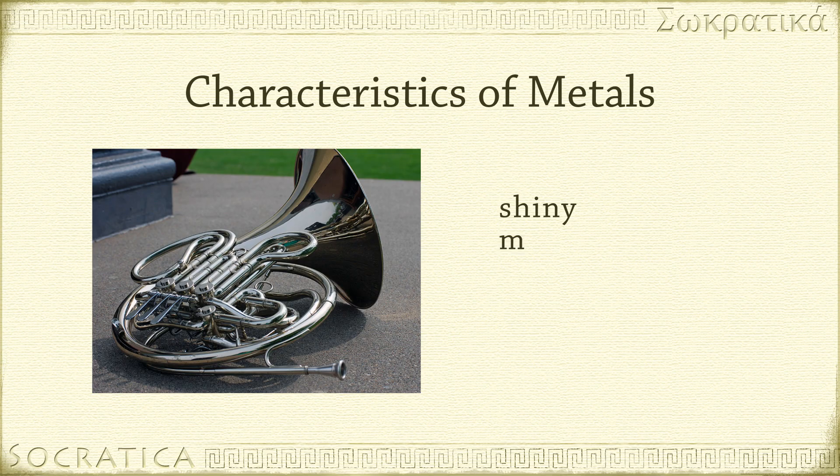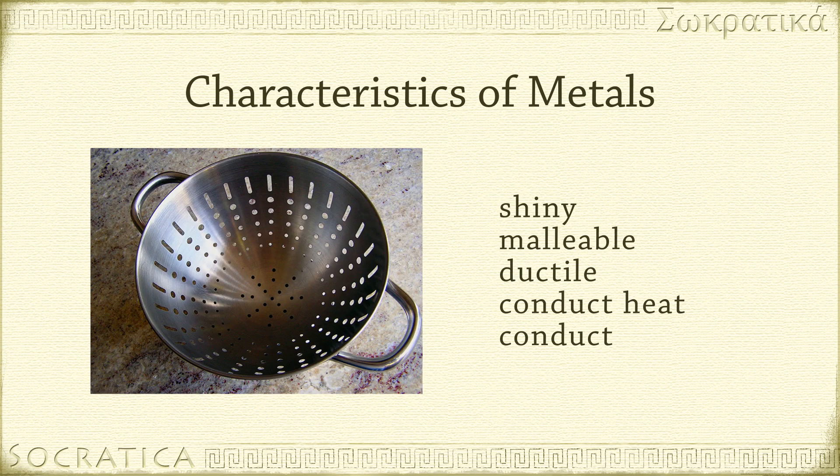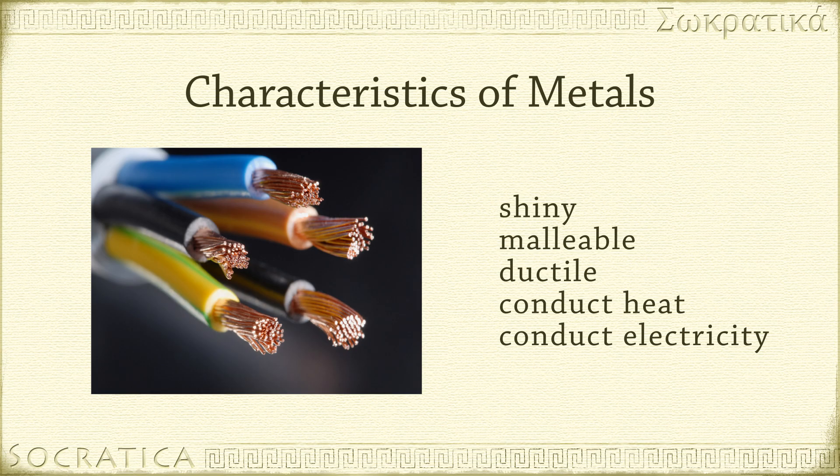Metals are shiny, malleable, ductile, and good conductors of heat and electricity. The structure of metals and the nature of metallic bonds explain some of these typical features.